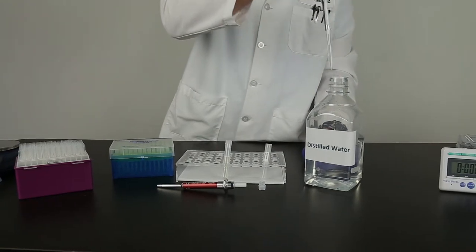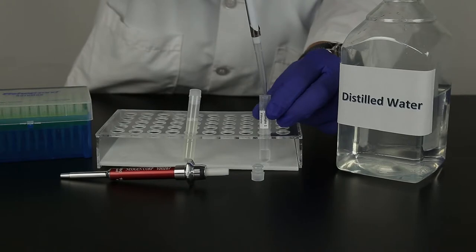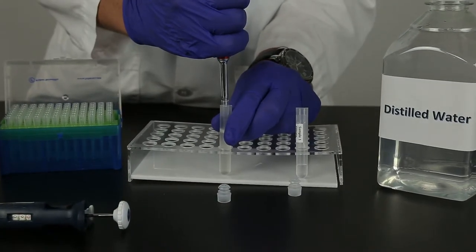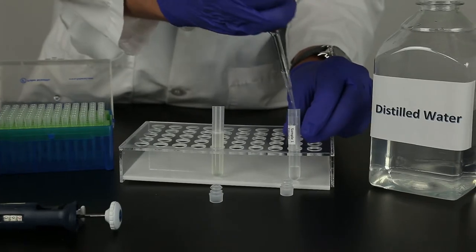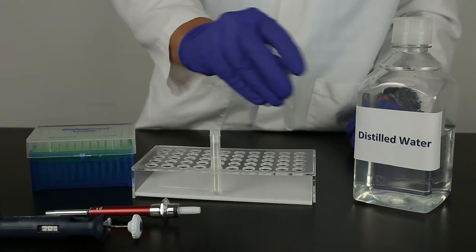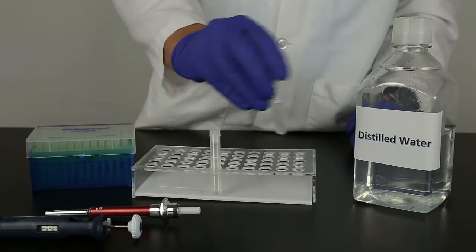Dilute the sample filtrate 1 to 10 by mixing 900 microliters distilled or deionized water with 100 microliters sample filtrate in a clean sample collection tube. Mix well. Label this tube diluted filtrate. Your sample is now ready to test.